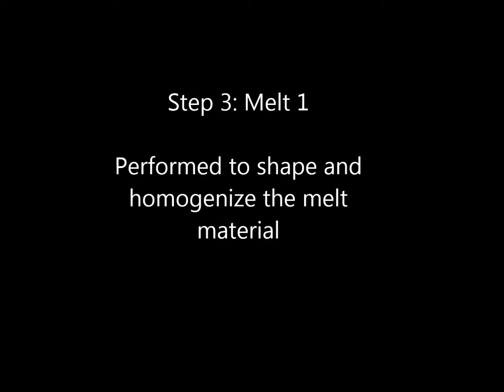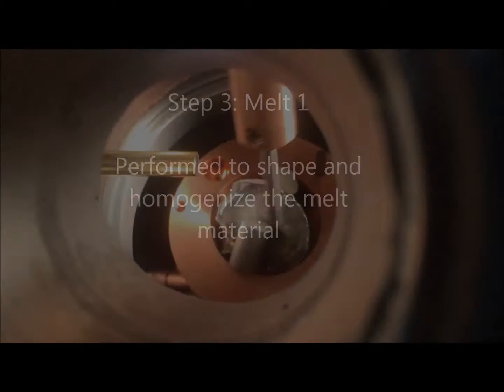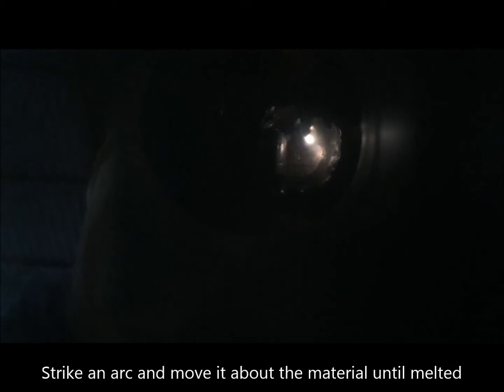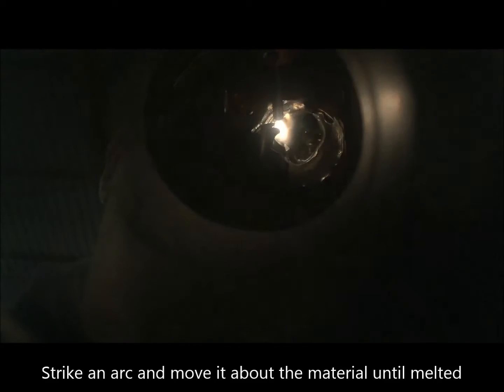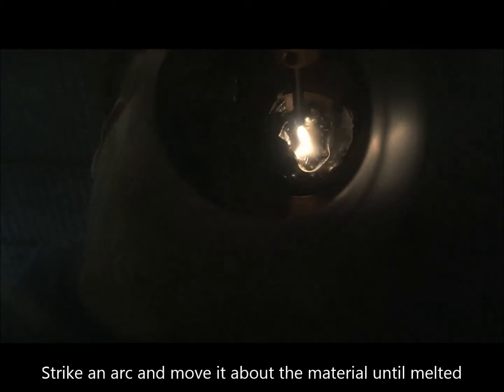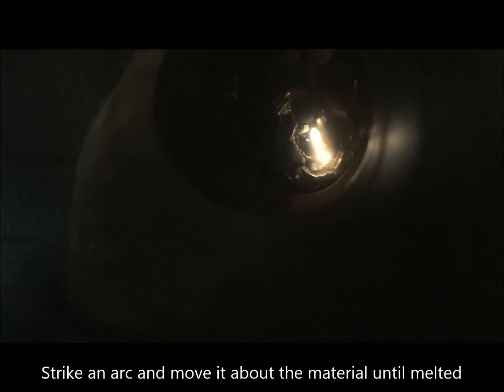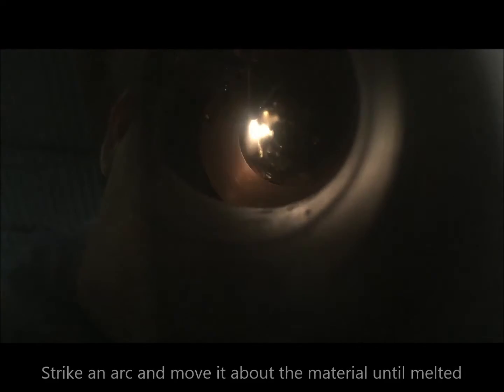Once the atmosphere preparations are complete, the operator then strikes an arc with the tungsten electrode. Once the arc has been established, the operator moves the electrode around taking care that all the material melts completely and mixes into one molten button. This may take some practice, but most catch on quickly.